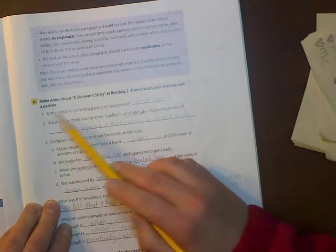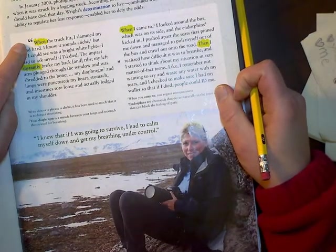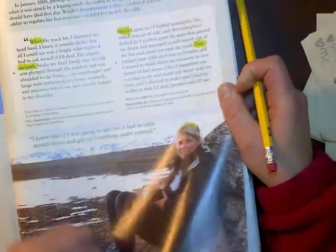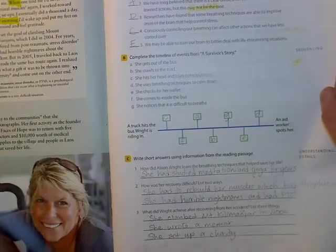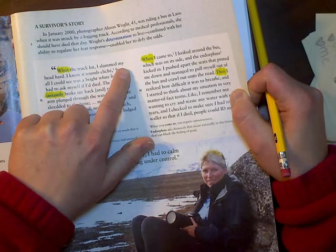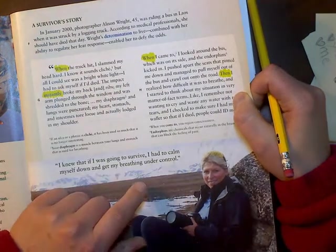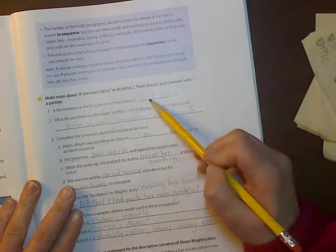So number one says, is the narrative in the first or the third person? Well, let's take a look. There's an introduction, but then there's a narrative and I see quotation marks at the beginning and at the end, which makes me think it's somebody else talking. So she says, when the truck hit, I slammed my head hard. I can tell she's talking about herself, so that would be the first person.